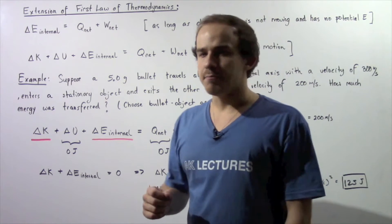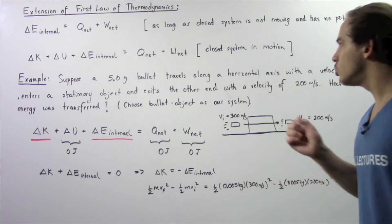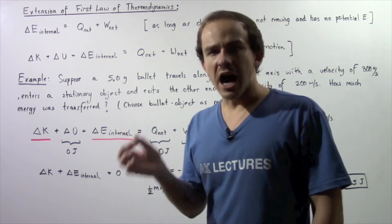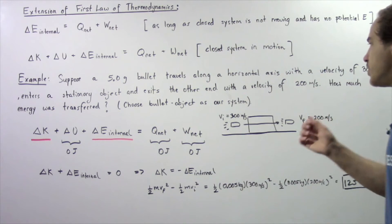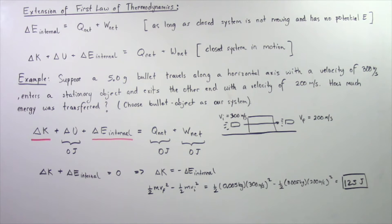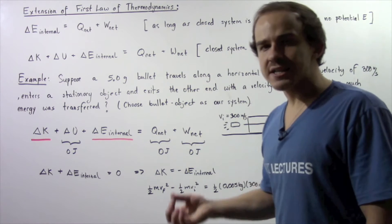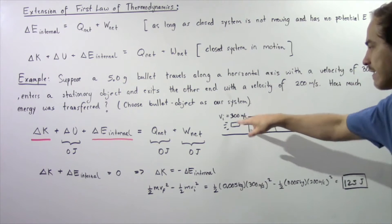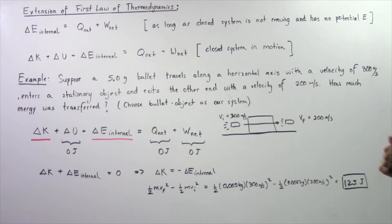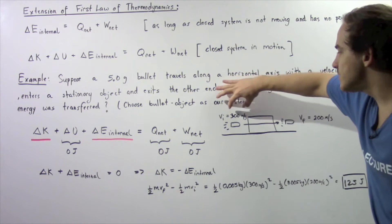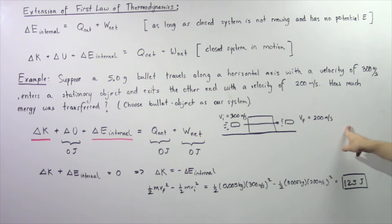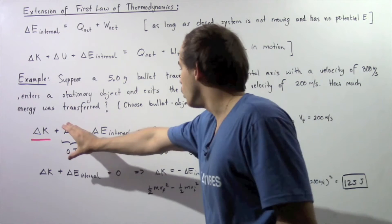Let's look at the following example. Suppose a 5 gram bullet travels along a horizontal axis with a velocity of 300 meters per second, enters a stationary wooden object, and exits the other end with a velocity of 200 meters per second. How much energy is transferred? Let's choose our bullet as our system. The initial velocity is 300 meters per second and the final velocity is 200 meters per second.